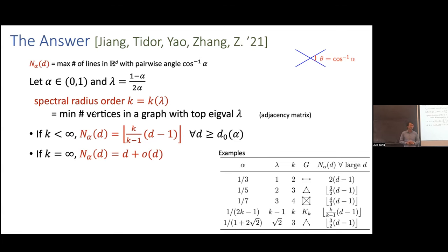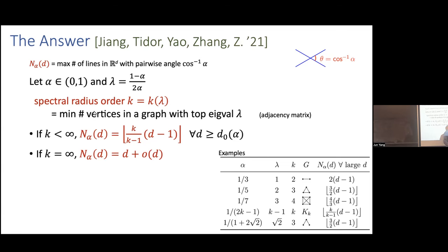Let me give an example. For alpha = 1/5, the transformation gives lambda = 2. The smallest graph with top eigenvalue equal to 2 is the triangle — a 2-regular graph — and no smaller graph has top eigenvalue 2, so k = 3. The theorem then says: if k is finite, there's an explicit formula for the maximum number of equiangular lines in high dimensions. If k is infinite, the answer is d plus a sublinear term in the dimension.